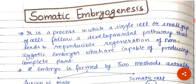Hello everyone. In this video we are going to discuss about somatic embryogenesis. Somatic embryogenesis is a process in which a single cell or a small group of cells follow a developmental pathway that leads to the reproducible regeneration of non-zygotic embryos which are capable of producing a complete plant.